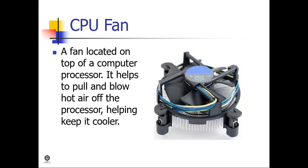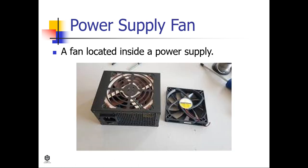The CPU fan is a fan located on top of a computer processor. It helps to pull and blow hot air off the processor, helping keep it cooler. The power supply fan is a fan located inside a power supply.